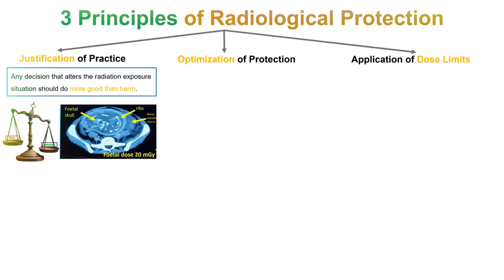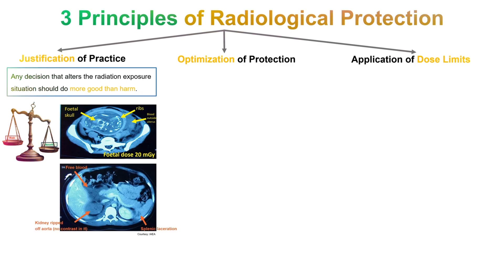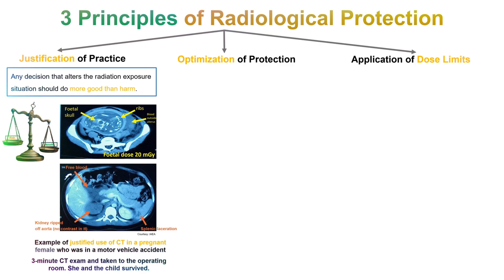Here is a lovely example of how justified use of radiation can save lives — in this case, the precious lives of a mother and a child in her womb. The images of the CT scan show a pregnant woman who met with a motor vehicle accident. After a three-minute CT exam and taken to the operating theater, she and the child survived — an invaluable, life-saving benefit from a justified practice of the medical use of radiation.